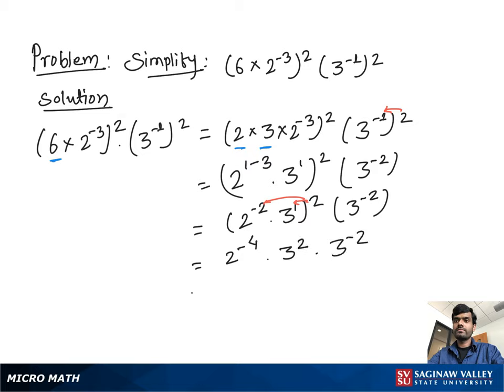To make power of 2 positive we write 1 over 2 to the 4th, and we add the powers of exponents with the same base so we get 3 to the 0. We know any term raised to the power 0 is 1, so 3 to the 0 is 1, and we have 1 over 2 to the 4th. 2 to the 4th is 16, so our answer is 1 over 16.